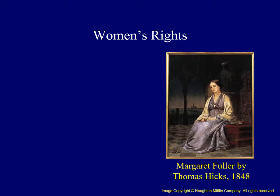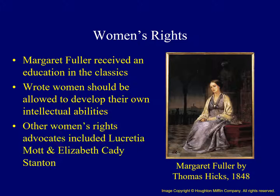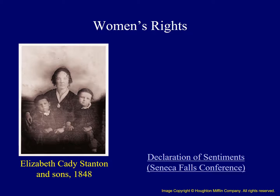The Grimke sisters were not the only advocates of women's rights. Margaret Fuller, as a child, studied Latin, English, and other classics, and later argued women must be allowed to develop their own intellectual abilities. Other women's rights advocates included Lucretia Mott and Elizabeth Cady Stanton, among others. In 1848, Stanton and Mott organized a women's rights convention in Seneca Falls, New York. Delegates protested the lack of property rights for married women and women's lack of voting rights. Their Declaration of Sentiments, modeled after the Declaration of Independence, argued that all men and women are created equal. It was not until the passage of the 19th Amendment in 1920 that all women were granted the right to vote in the United States.